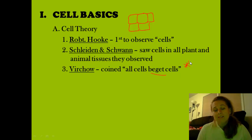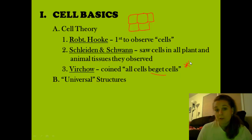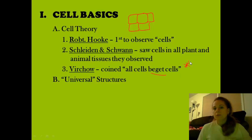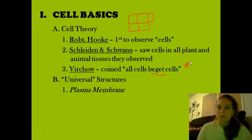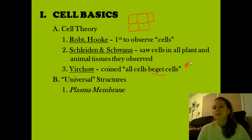What's really neat about cells is that there are universal structures. By universal, I mean that all life we have discovered has consistencies — threads that bind us all together. Some of these universal structures include the plasma membrane. We've already mentioned this one; its main component is the phospholipid. All living cells have a membrane comprised of phospholipids built in the same way — a pretty neat consistency in life.